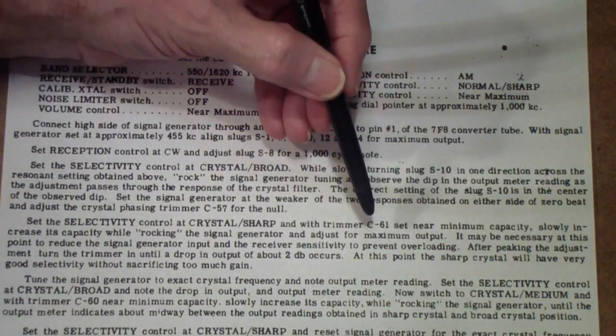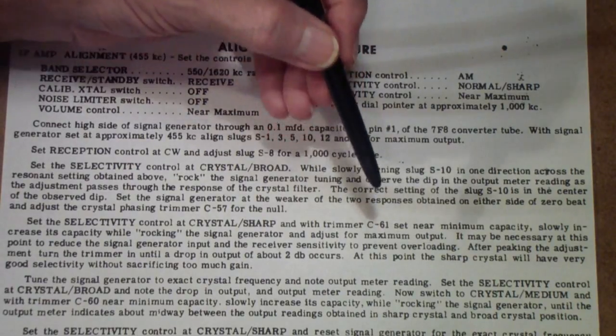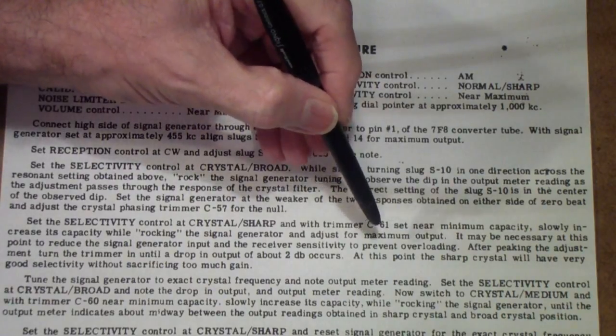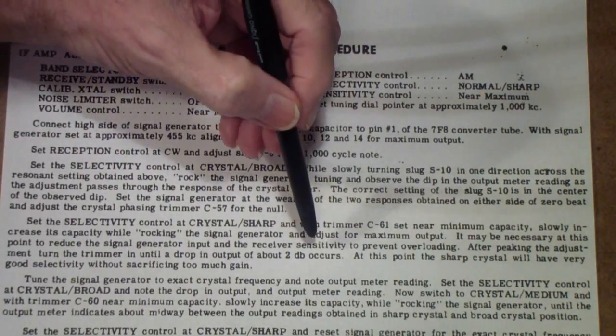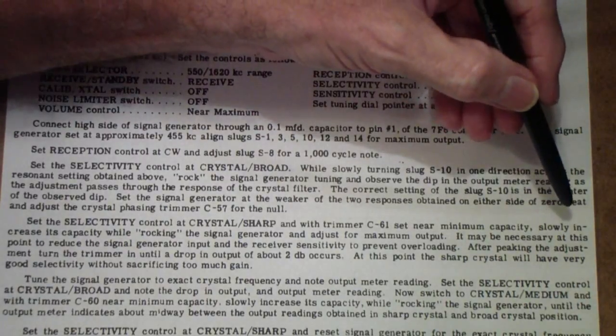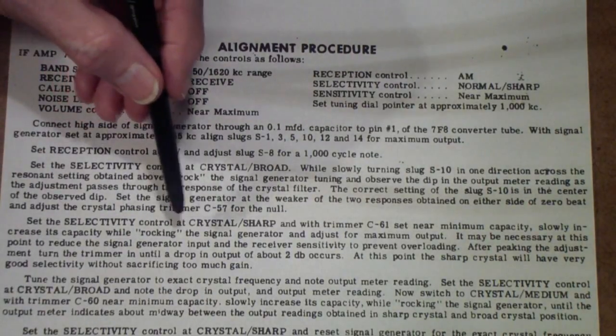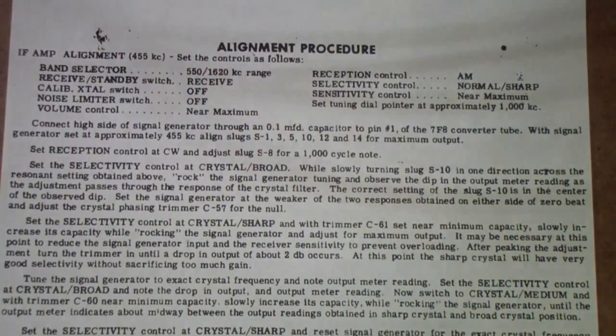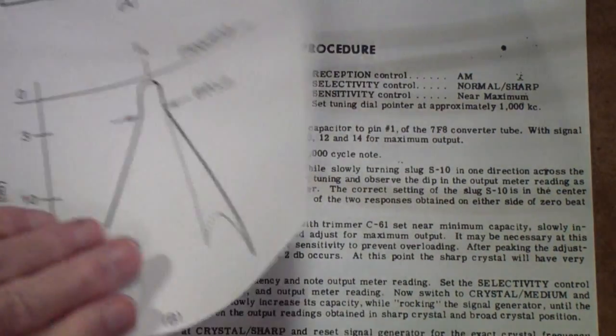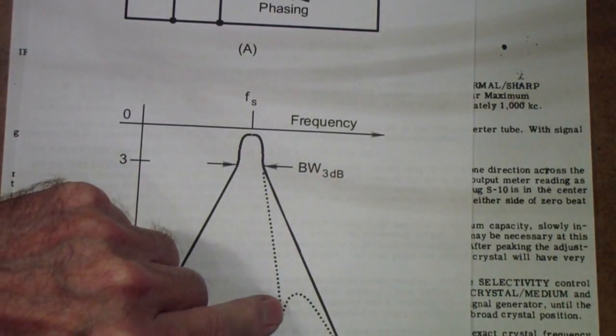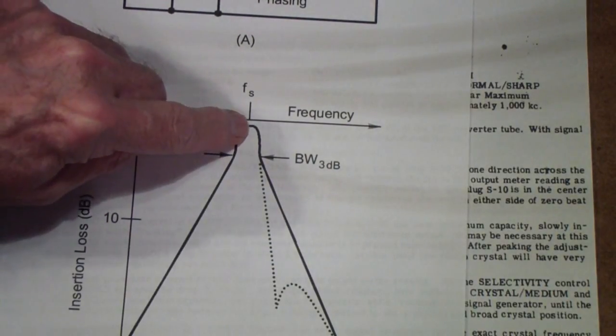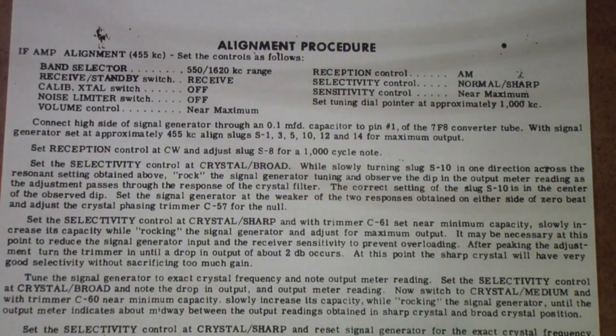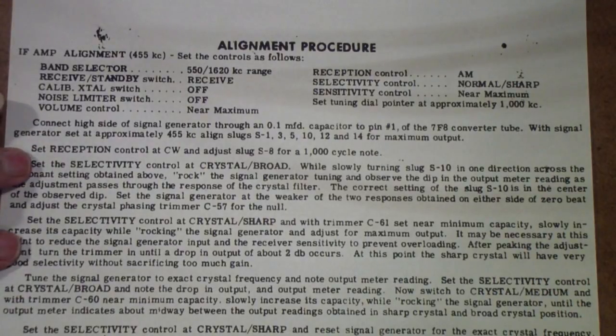that's normal however if you properly adjust C61 starting at its minimum capacity and you want to do that to begin with so that you're going from less capacity to more capacity and then slowly increase the capacity while rocking and adjust for maximum output what you are doing is making sure that this null isn't right in the middle of the peak in other words to one side or the other that's the way you adjust these two